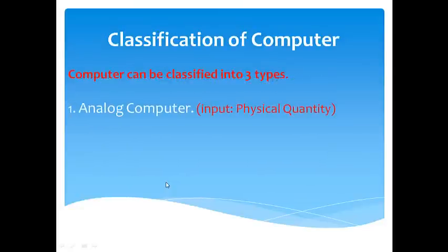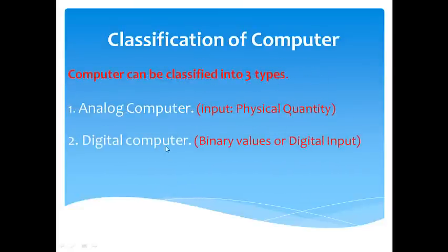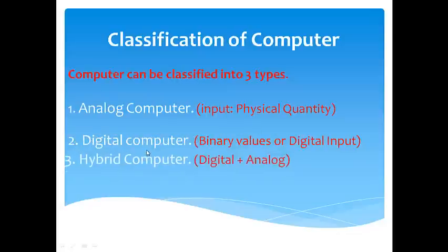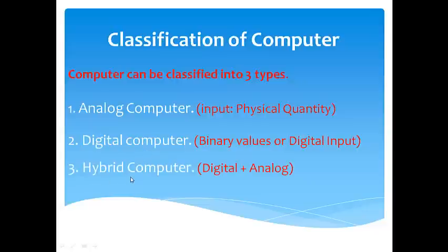The major categories of computers: First, analog — where the input is a physical quantity like temperature, pressure, and so on. In the case of a digital computer, it uses digital values or digital signals, that's why it is called a digital computer. This digital computer is most commonly used across hobbies and many applications. Next comes the hybrid computer, which is a combination of digital plus analog. That's why the name hybrid — it is a new generation from existing analog and digital.